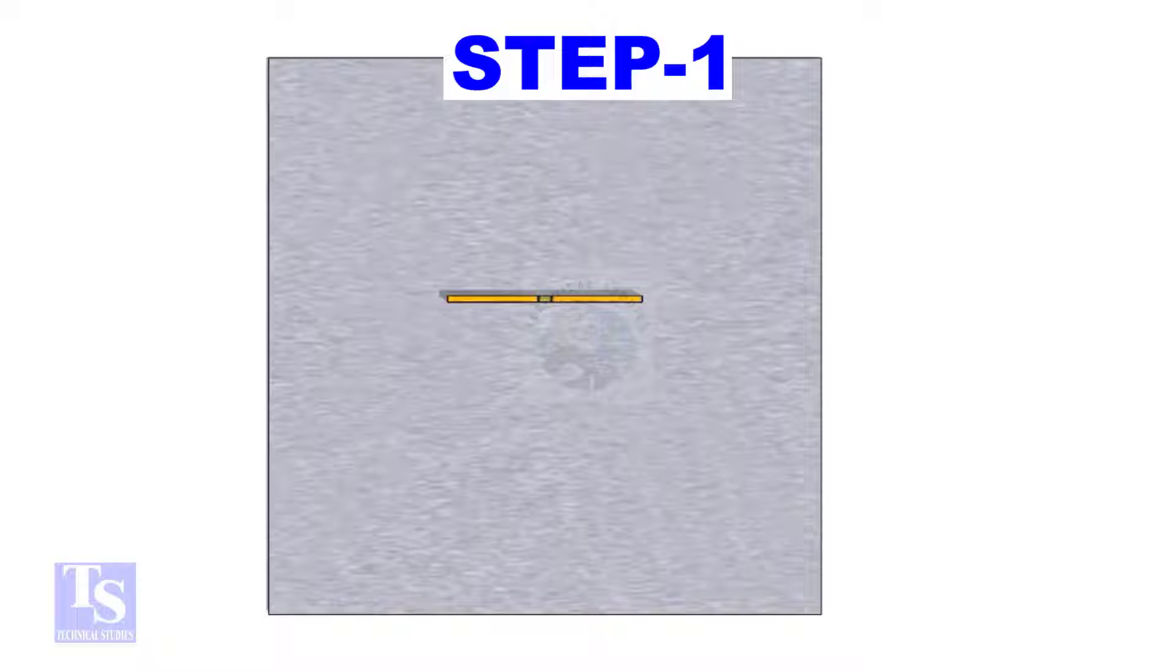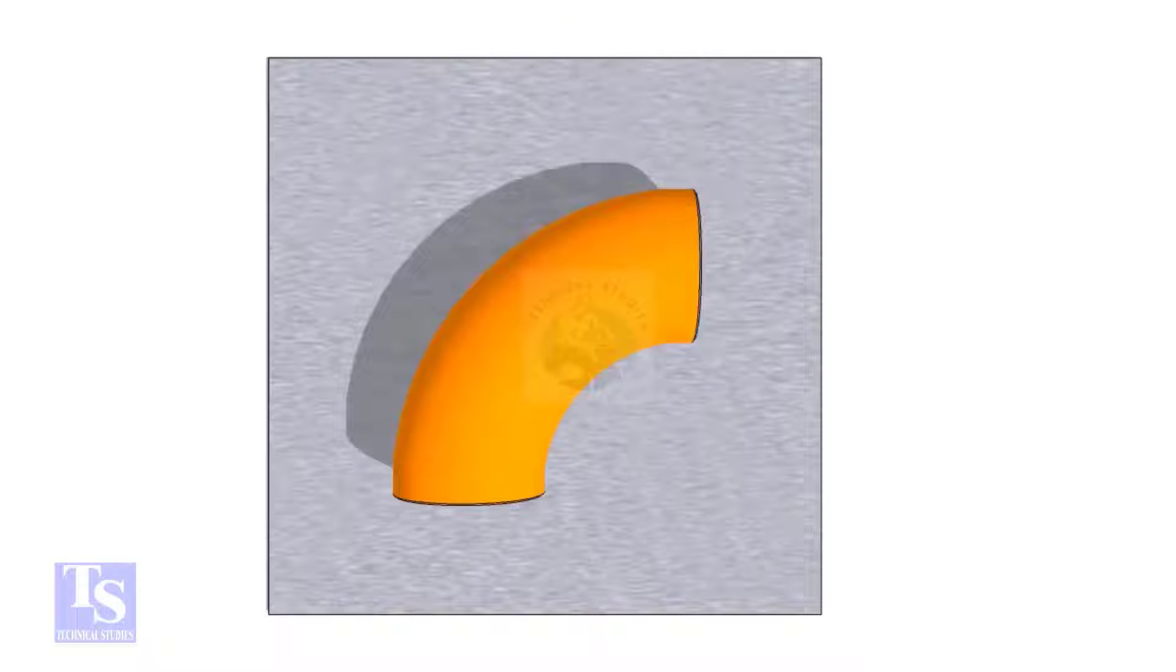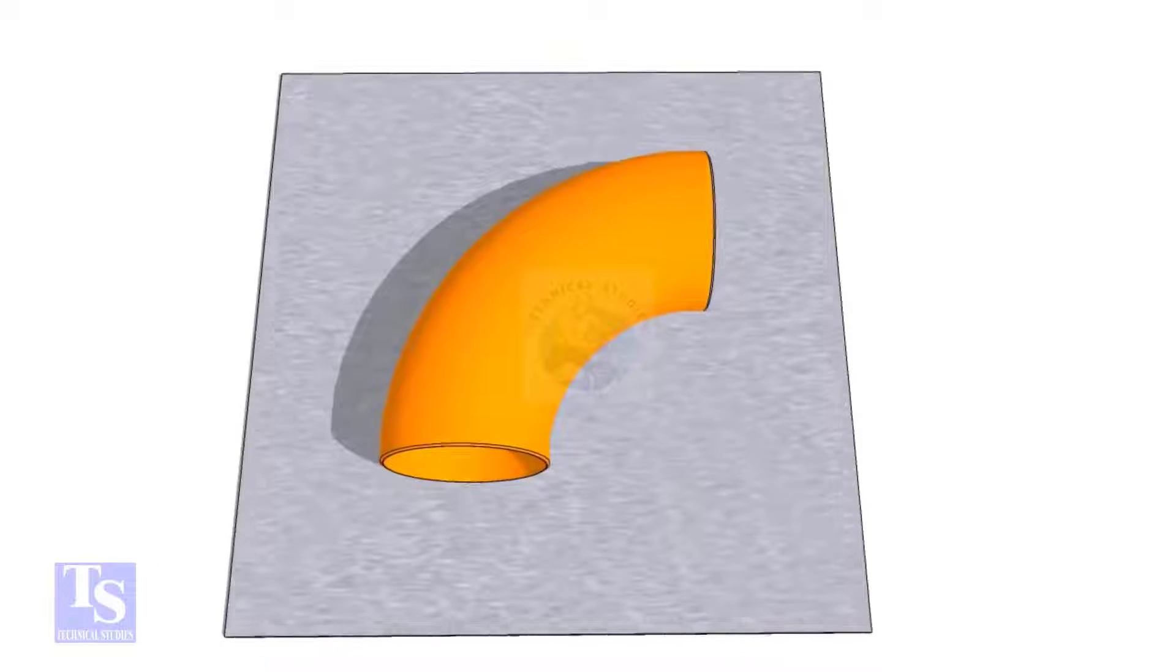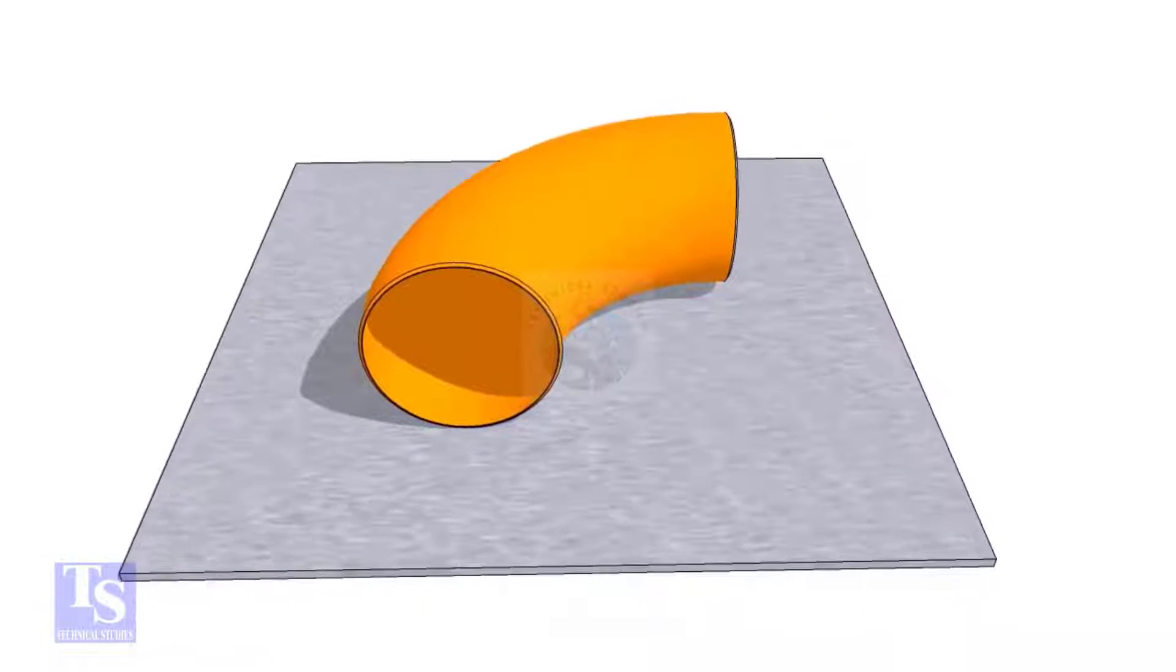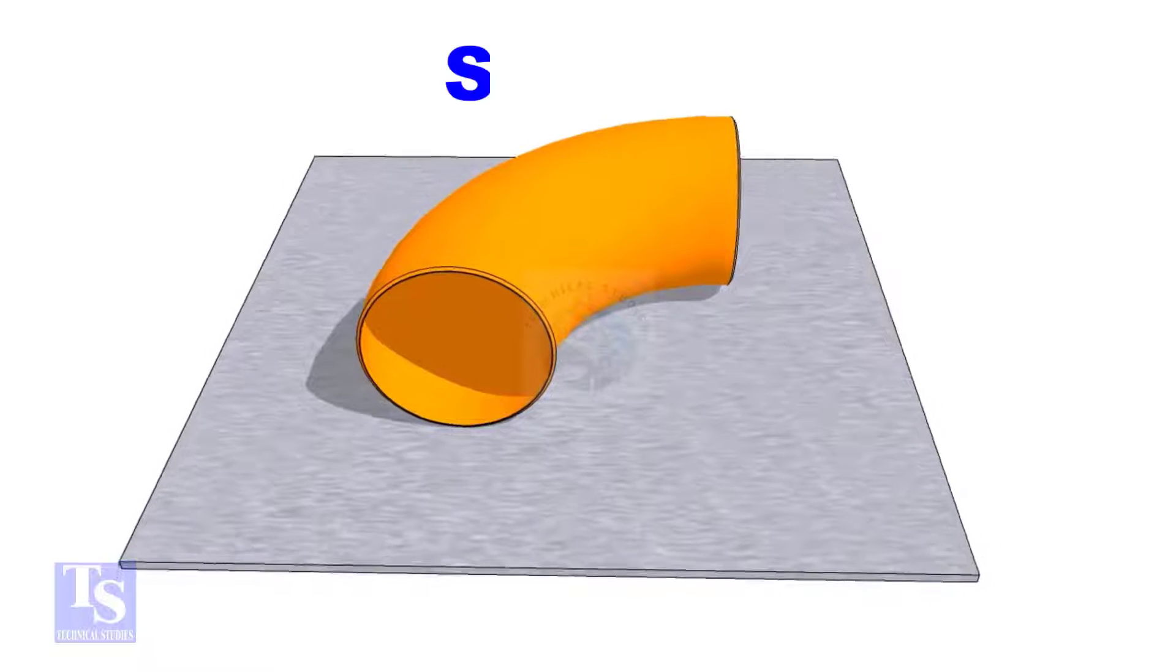First of all, choose a leveled plate and put the elbow on it. Check the outer diameter of the elbow.